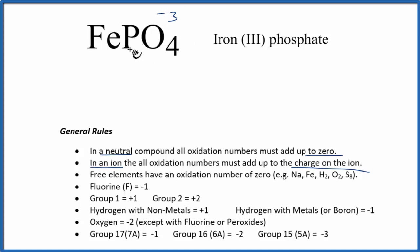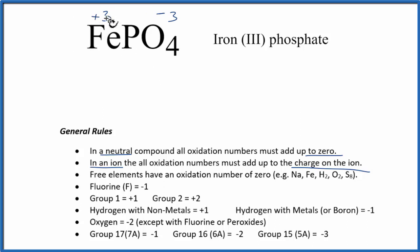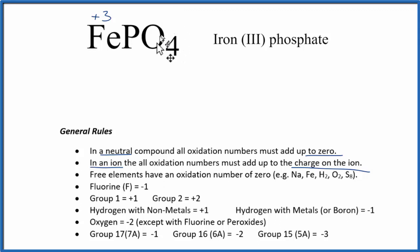Therefore, for all the charges to add up to 0, iron has to be plus 3. So the oxidation number on iron is +3. Now that we know iron is plus 3, let's look at the individual elements in PO₄, the phosphate ion.